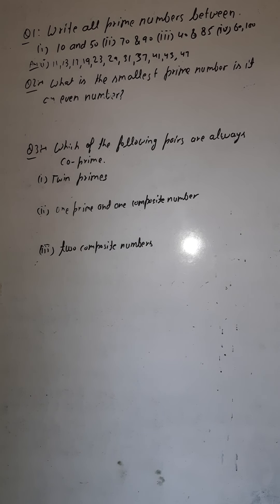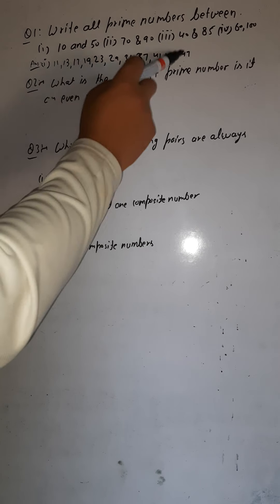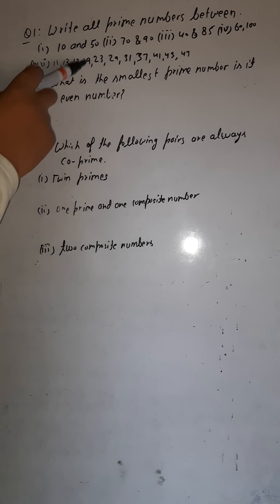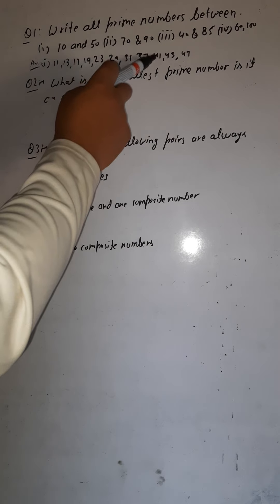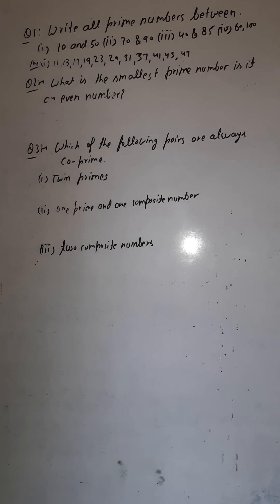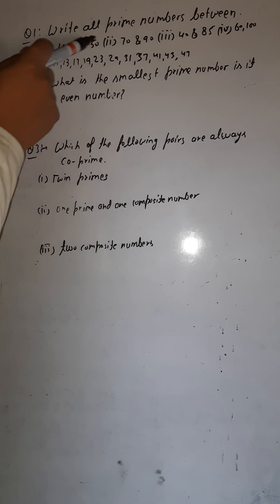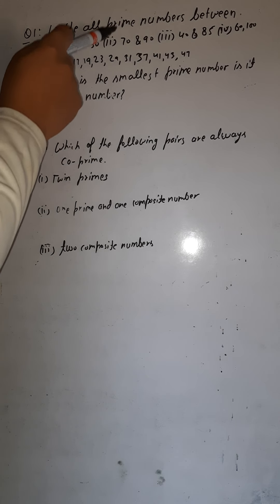So between 10 and 50, the prime numbers are: 11, 13, 17, 19, 23, 29, 31, 37, 41, 43, and 47. These are all the prime numbers between 10 and 50. Similarly, you have to write the answer for the second question on your own.